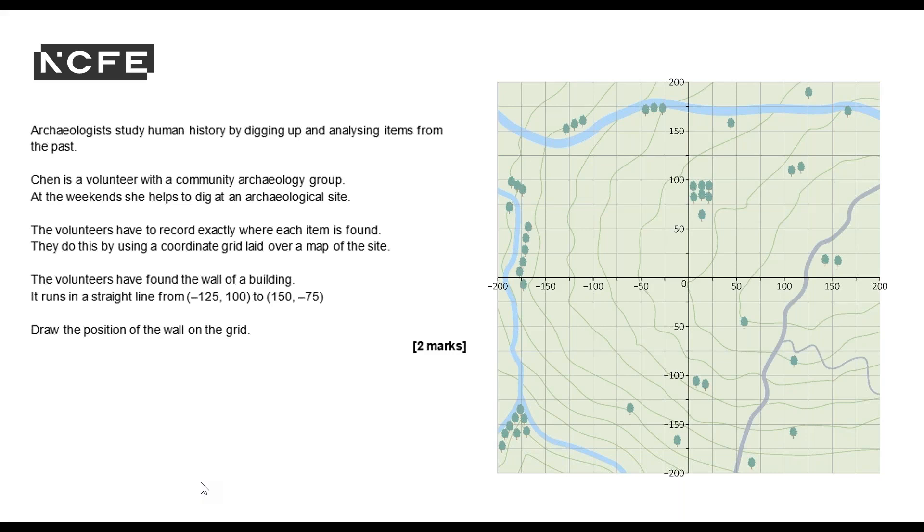The volunteers have found the wall of a building. It runs in a straight line from minus 125, 100 to 150, minus 75. Draw the position of the wall on the grid.